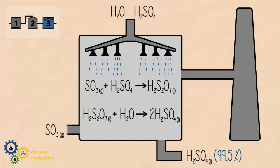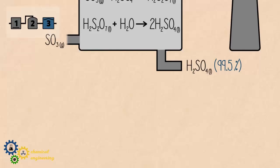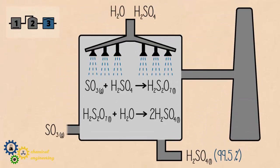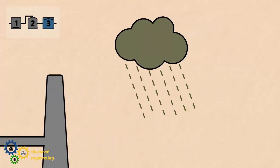99.5% pure sulphuric acid is then collected and is shipped off to where it is needed next. There are some acidic waste gases from stage 3, which can escape and cause local acid rain.